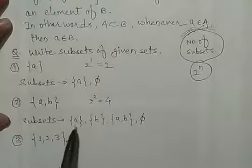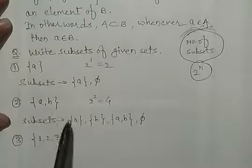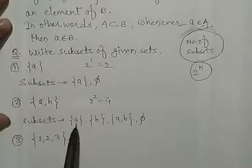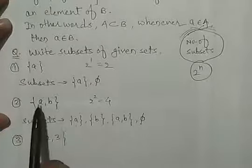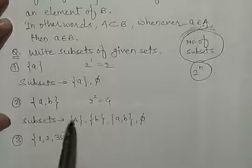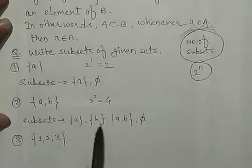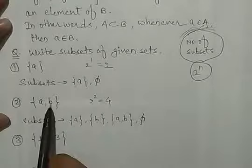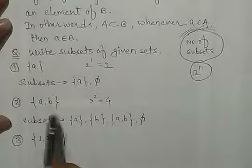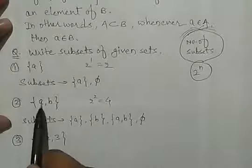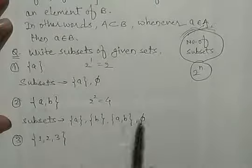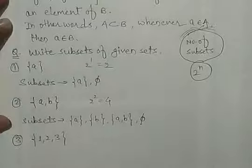कैसे होगा subset — कि यह जो subset है, इसका element उस set को belong करना चाहिए. तो यहाँ पर {a} है, यहाँ पर भी a है; {b} है, यह b इस set में भी है; {a, b} दोनों इस set में हैं; और एक null set — okay.